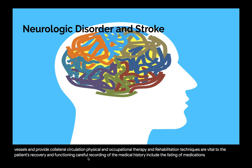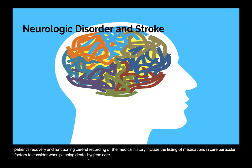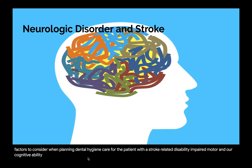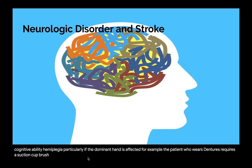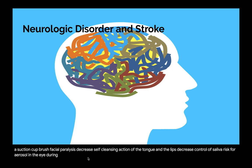Particular factors to consider when planning dental hygiene care for the patient with a stroke-related disability include impaired motor and/or cognitive ability, hemiplegia (particularly if the dominant hand is affected — for example, the patient who wears dentures requires a suction cup brush), facial paralysis, decreased self-cleansing action of the tongue and lips, decreased control of saliva, risk for aerosol in the eye during treatment, and anticoagulant use, which is common following a stroke.